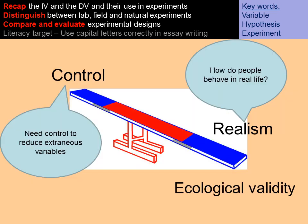Control and realism within these experiments is a bit like a see-saw. The more control you have, the less realism or ecological validity you have. In a lab experiment, lots of controls are put into place to reduce variables interfering with the cause and effect relationship between the IV and the DV. However, in order to put all these controls in place, the result is often a very low realistic outcome which lacks ecological validity in terms of whether participants' behavior can be generalized to real life.